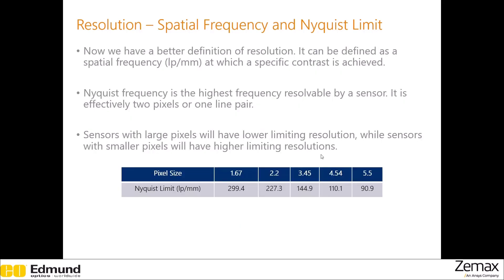An important parameter when spatial frequency is concerned is the Nyquist frequency. It is the highest spatial frequency resolvable by a sensor — effectively two pixels or one line pair. It should now make sense that sensors with large pixels will have lower limiting resolution, and sensors with small pixels will have higher limiting resolution.